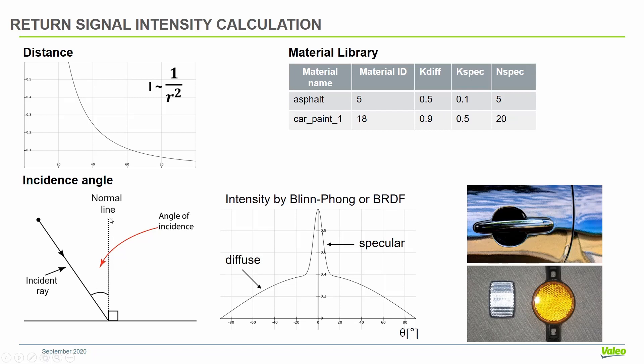We can use the incidence angle to model the reflective properties of this material. If we have a surface normal of the object and the incident ray, we can calculate the angle of incidence, or it is already calculated by CarMaker in the newer versions.